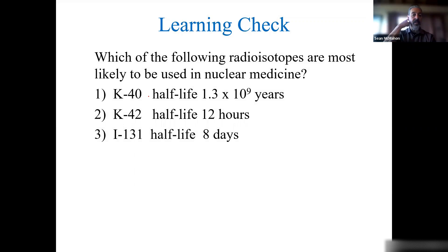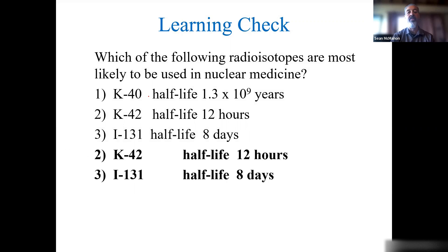Knowing this, which of the following radioisotopes are most likely used in nuclear medicine? Potassium-40, potassium-42, iodine-131? The answer is potassium-42 because it's hours, and iodine-131 because someone could return a few days later.